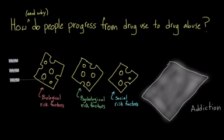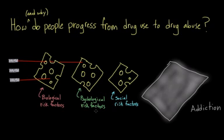If someone uses substances but doesn't have a lot of risk factors — not many holes in their Swiss cheese — the cheese will block the laser pointer beam and the person will not develop addiction. But if someone does have some risk factors, like a relative with a substance abuse problem, some of the light will get through. However, if they have fewer holes in their other slices, or if they aren't lined up in the correct pattern, the light will stop there. But if someone has a lot of holes — a lot of risk factors — or maybe an average amount lined up in a very particular way, the laser will shine directly through all the slices and illuminate the back wall, meaning that person will develop addiction.